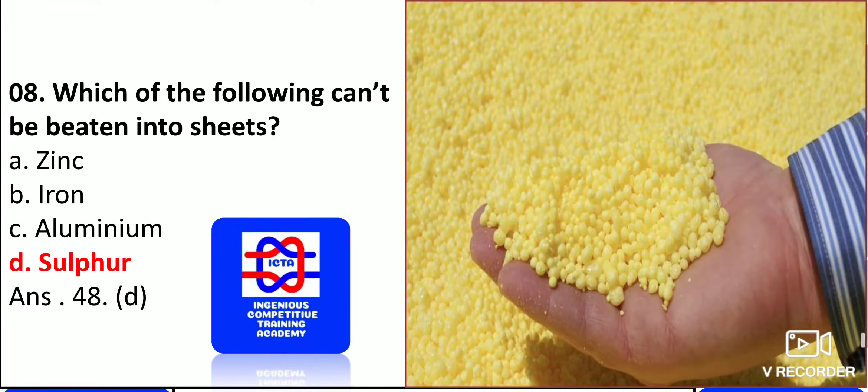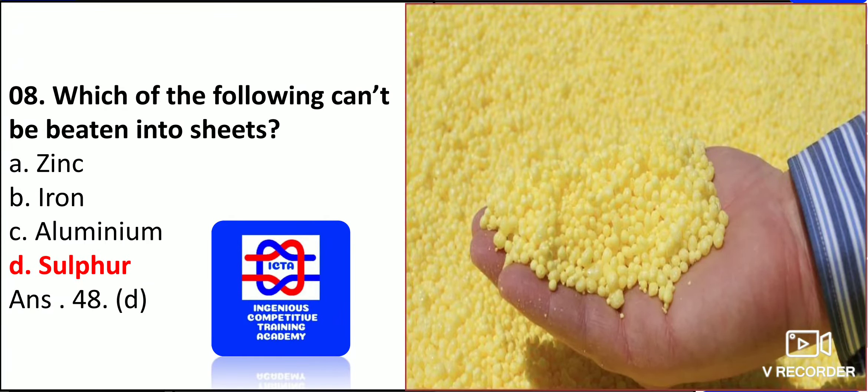Which of the following can't be beaten into sheets? That is sulfur. As you can see to the right side how exactly it looks. Zinc, iron and aluminum, these are all metals which can be drawn into sheets. That is, they have the property of ductility or malleability.